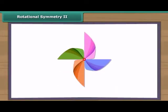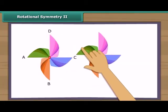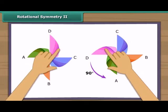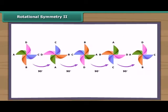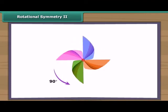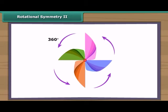This is a paper windmill — it has rotational symmetry. If you rotate it by 90 degrees about the fixed point, the windmill will look exactly the same. In a full turn, there are four positions — on rotation through 90 degrees, 180 degrees, 270 degrees, and 360 degrees — when the windmill looks exactly the same. Therefore, we can say that it has a rotational symmetry of order 4.